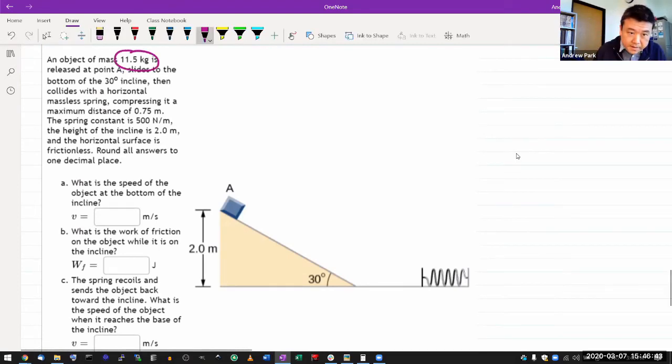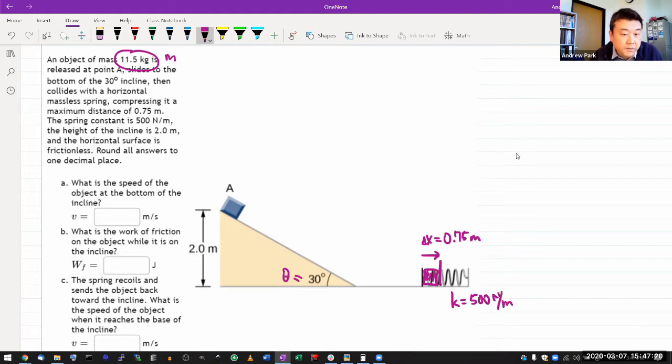So it has object of some mass m, it's released at some point, slides the bottom of the incline of angle theta, then collides with the horizontal massless spring, compressing it. So let me just draw, so eventually they'll have compressed it by some amount. And I'm given that displacement, delta x of 0.75 meters. And the spring constant, good to have the number actually, 500 newtons per meter. The height of the incline is given at two meters, and the horizontal surface is frictionless. So this is the surface that's frictionless. Wait, then do I have, I must have friction along the incline here.